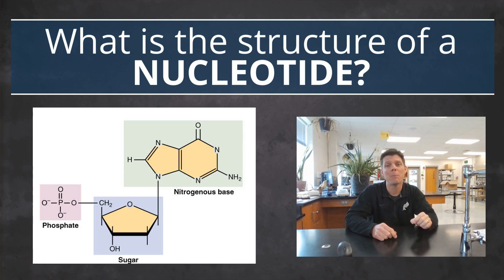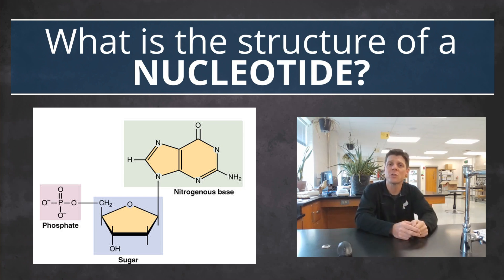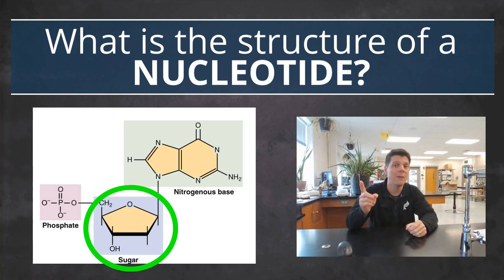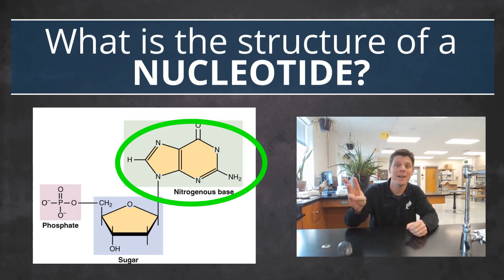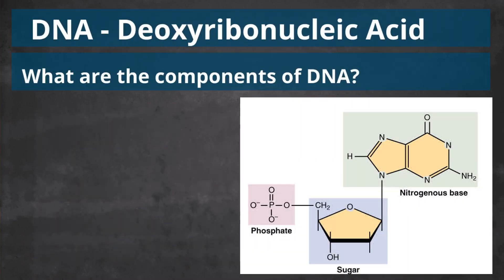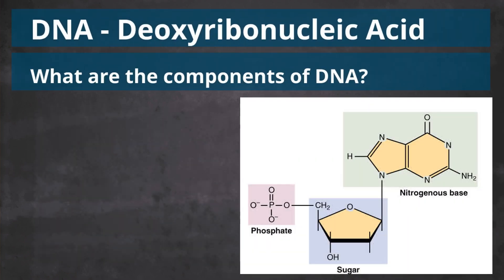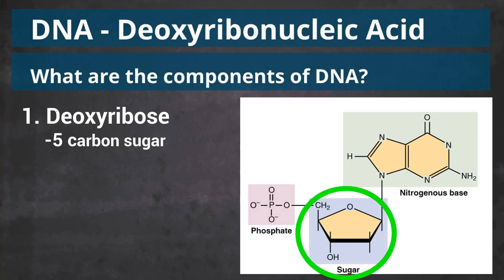Nucleotides, the monomers that make up both DNA and RNA, all share three structural components. They have a 5-carbon sugar, a phosphate group, and a nitrogen base. The name DNA is short for deoxyribonucleic acid. The first part of the name identifies the 5-carbon sugar found in DNA, deoxyribose. This sugar is often called a pentosugar because of its pentagon ring structure.